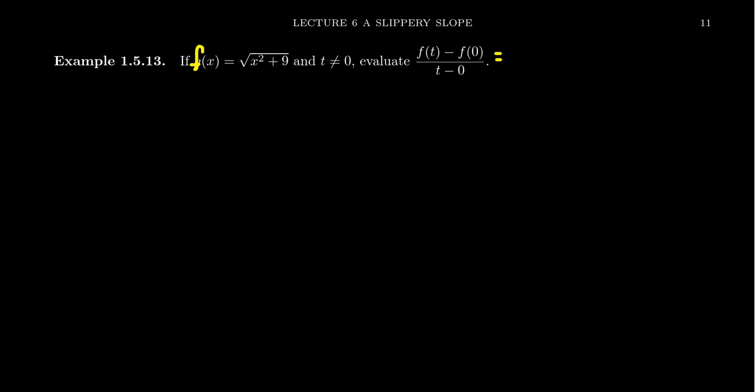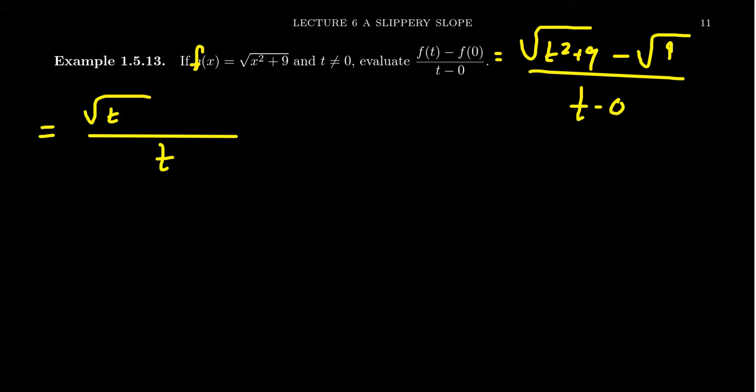So we want to compute the difference quotient of f of t minus f of 0 over t minus 0. f of t just means replace all of the x values with t's. And so we're going to get the square root of t squared plus 9. Then subtract from that f of 0. f of 0 would be the square root of 9. Plug in x equals 0 there. And in the denominator, you're going to get t minus 0. Minusing 0 from anything will just give you back the other number, you get back a t. So we get the square root of t squared plus 9 minus 3.